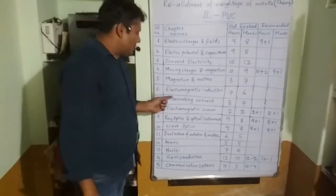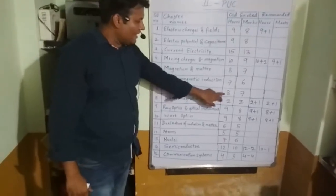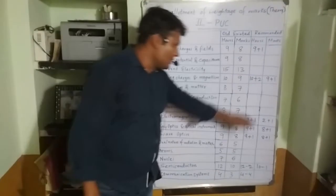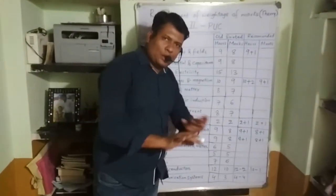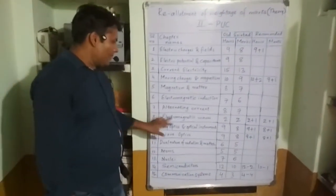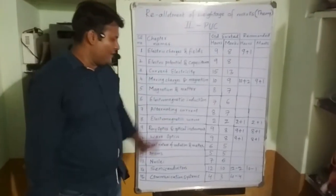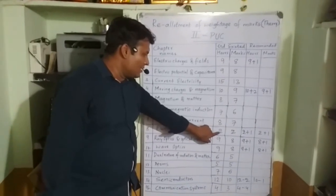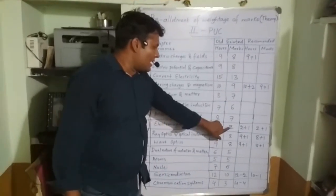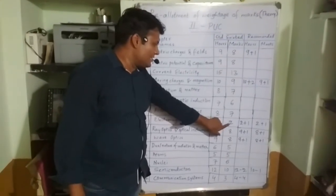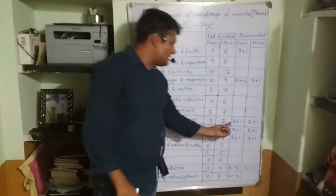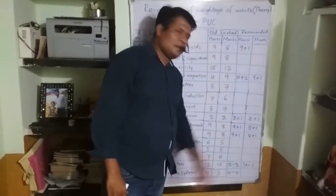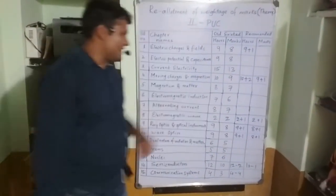The seventh chapter, Alternating Current, was allotted eight hours for teaching and seven marks in the old section. No changes have been made in the new recommended section. The eighth chapter, Electromagnetic Waves, was carrying two teaching hours and two marks in the old section. In the new recommended section, two plus one — that is three hours for teaching — and two plus one — three marks — is the updated weightage.